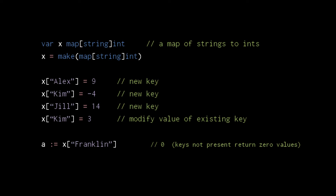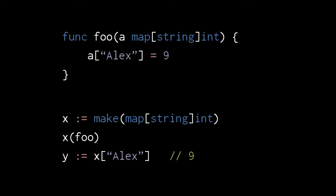To distinguish between cases where a key is not present and cases where the key is present but its value is actually zero, we use multi-value assignment. The value retrieved is assigned to the first variable, and the boolean value indicating whether the key is present in the map is assigned to the second. So here, a will be assigned zero and b will be assigned false because the key Franklin is not present in the map of x. Because map variables are really just references, the parameter of the function foo receives a reference to the same map data structure referenced by variable x. So when we add a key-value pair to the parameter's map, the same key-value pair is accessible via variable x.